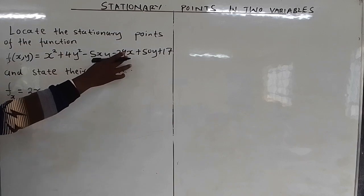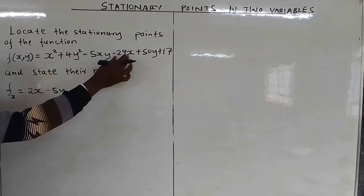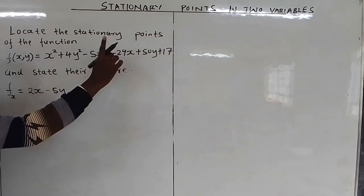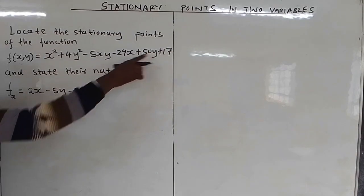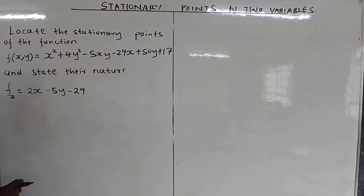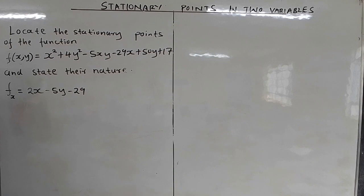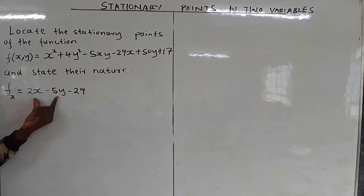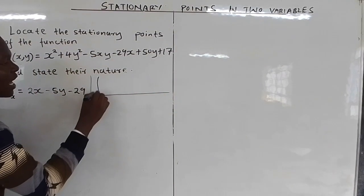If you differentiate -29x partially with respect to x, -29 is a constant and differentiating x gives 1, so you remain with -29. For 50y, there is no x, so it is a constant giving 0. Differentiating the constant 17 also gives 0. So the first partial derivative ∂f/∂x = 2x - 5y - 29.